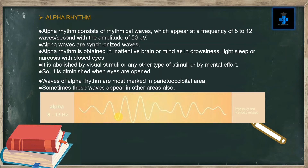Alpha rhythm consists of rhythmical waves appearing at a frequency of 8 to 12 waves per second with an amplitude of 50 microvolts. Alpha waves are synchronized waves. Alpha rhythm is obtained in an inattentive brain or mind, as in drowsiness, light sleep, or narcosis with closed eyes. It is abolished by visual stimuli, any other type of stimuli, or even by mental effort, so it is diminished when eyes are opened. Waves of alpha rhythm are most marked in the parieto-occipital area.